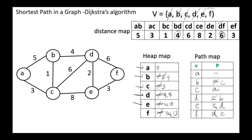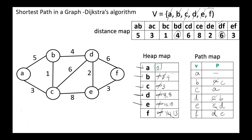The only remaining vertex is F, and the edges from F to D and to E were already considered. Now we are done. Here we have the shortest distances from A to all other vertices: A to B is 4, to C is 3, to D is 8, to E is 10, and to F is 13.